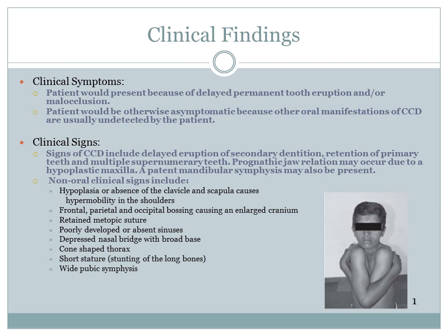Non-oral clinical signs include hypoplasia or absence of the clavicle and scapula, causing hypermobility in the shoulders. Additional signs include frontal, parietal, and occipital bossing causing an enlarged cranium, retained metopic sutures, poorly developed or absent sinuses, depressed nasal bridge with a broad base, cone-shaped thorax, short stature, and a wide pubic symphysis.